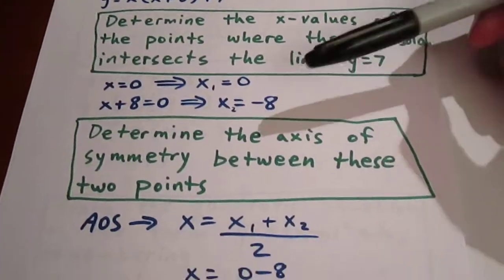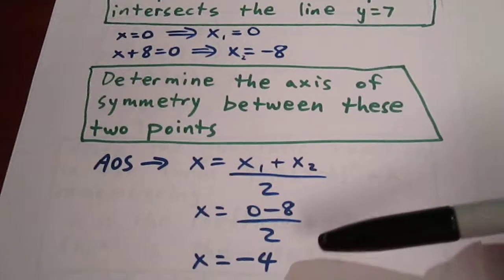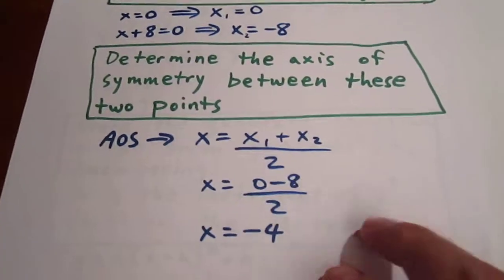We can then determine the axis of symmetry between these two points by adding them and dividing by 2, and we get x equals negative 4. That's the x value of the vertex.